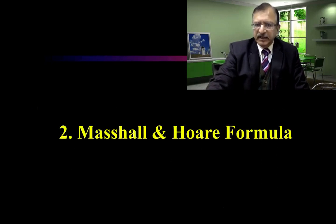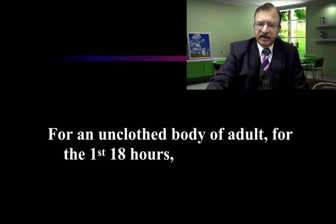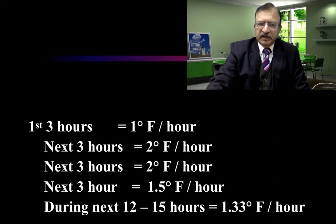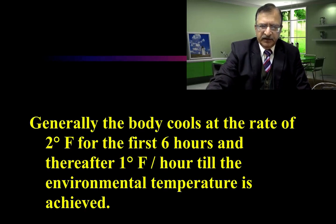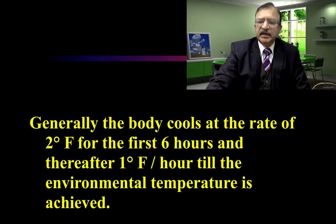According to Marshall and Hoare, for an unclothed body of an adult during the first 18 hours: in the initial 3 hours, 1 degree Fahrenheit per hour; next 3 hours, 2 degrees Fahrenheit per hour; next 3 hours, 1.5 degrees Fahrenheit per hour; and the following 3 hours, 1.5 degrees Fahrenheit per hour. During the next 12 to 15 hours after that, 1.3 degrees Fahrenheit per hour. Generally, the body cools at the rate of 2 degrees Fahrenheit for the first 6 hours, and thereafter 1 degree Fahrenheit per hour, until it attains the environmental temperature.